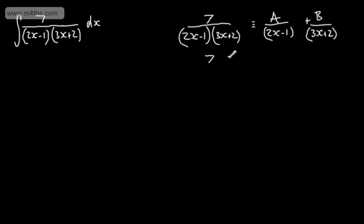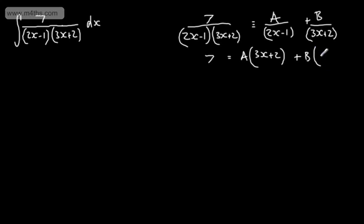Rewriting, we're going to have 7 equals a times (3x plus 2) plus b times (2x minus 1). We can of course set x to be minus 2 thirds, then x to be positive 1 half, or we could solve a simultaneous equation.